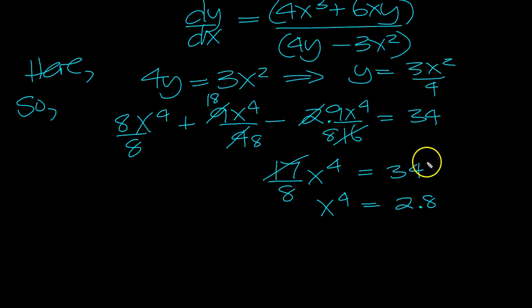So x to the 4 will be 2 times the 8, won't it? So 17 will cancel with that to leave 2, and the 8 comes out, which is 16. So x will equal 2, or x equals minus 2, the two possibilities.